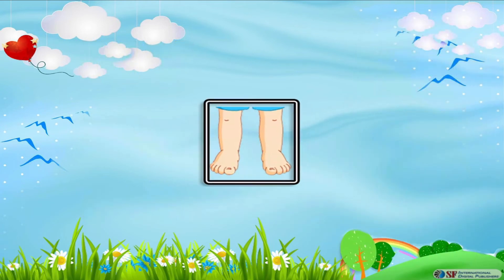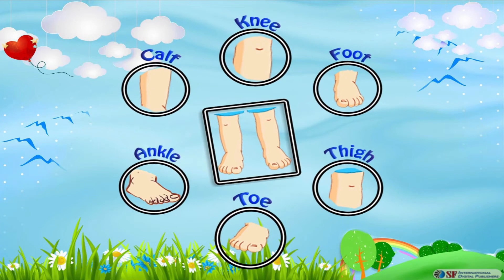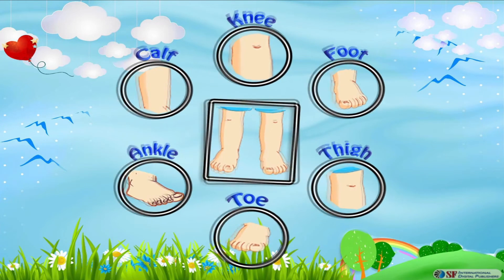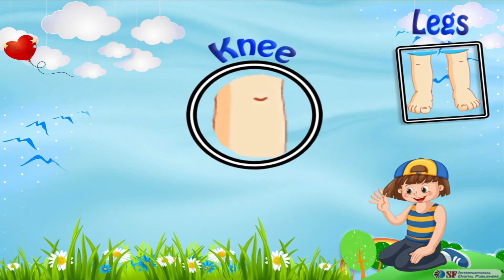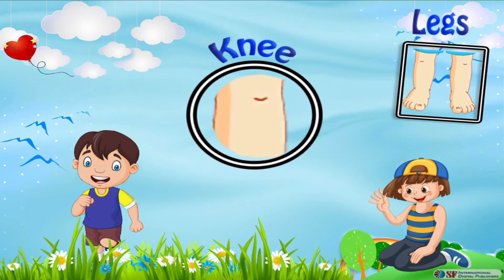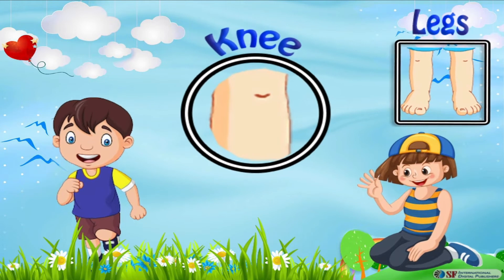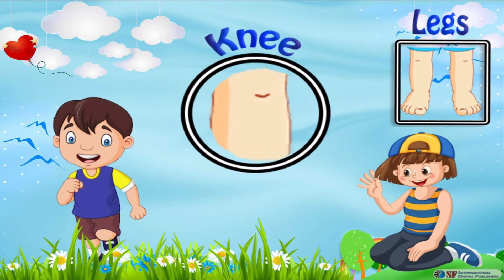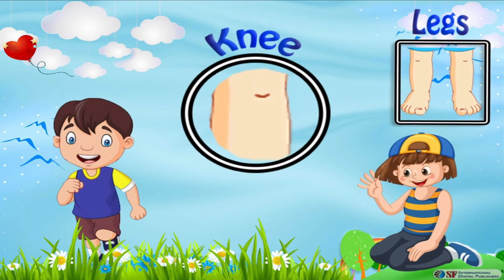Now let's discuss our legs and their parts. Knees are located between our thighs and lower legs. The knee joint is one of the strongest and most important joints in our body. Our knee movement plays a very important role in our daily lives, which may include walking, running, sitting, and standing. We have a pair of knees, one for each leg.